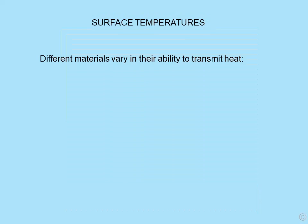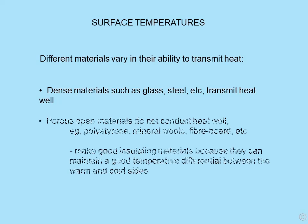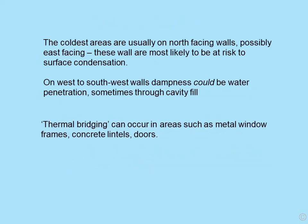Surface temperatures vary. Dense materials such as glass, steel and tiles transmit heat — and cold — well. Porous, open materials do not conduct heat well and make very good insulating materials, maintaining a good temperature differential between warm and cold sides. Coldest areas are usually on north-facing walls, possibly east-facing, and those are most at risk of surface condensation. On west to southwest walls, dampness could be water penetration, sometimes through cavity fill. Thermal bridging can occur at metal window frames, concrete lintels, doors and other structures.